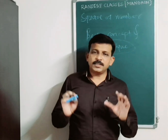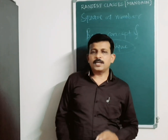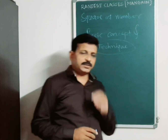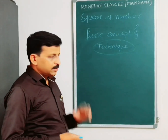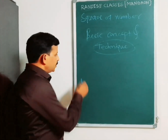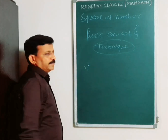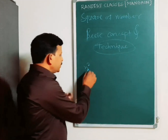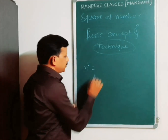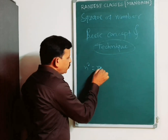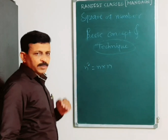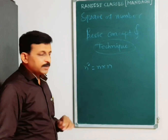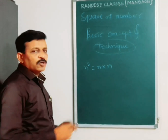My friend, in this video we will discuss about the square. First, what is the square? See here: n raised to 2. Just call it n square, and write it in the form n into n. It means multiply the same number by itself. That is the square of a number.